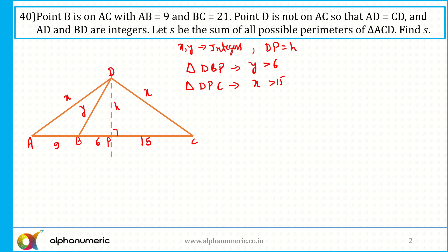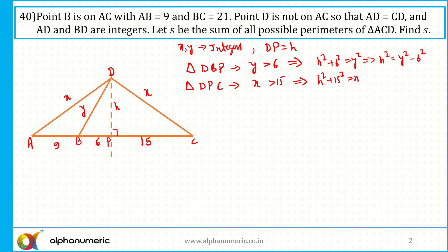I need to find all possible integer values of X and Y. In triangle DBP, using Pythagoras: H² plus 6² equals Y², so H² equals Y² minus 36. Similarly in triangle DPC: H² plus 15² equals X², so H² equals X² minus 225. Equating these two expressions gives Y² minus 36 equals X² minus 225.